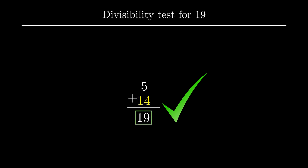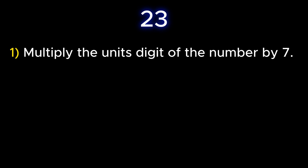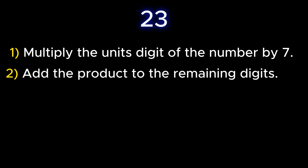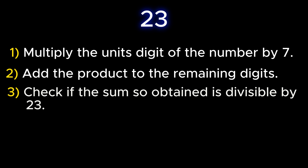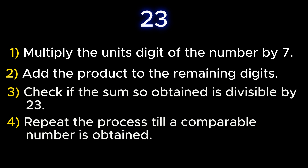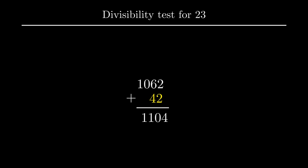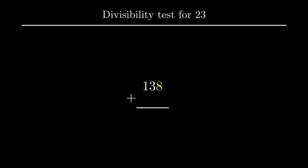Moving on to the next prime number, that is number 23. To check whether a number is divisible by 23, multiply the units digit by 7 and add it to the remaining digits. If the sum is divisible by 23, the given number is also divisible by 23; repeat until a comparable number is obtained. Consider the number 10626. The units digit 6 is multiplied by 7, giving 42, which is added to 1062, giving 1104. Repeating: 4 × 7 = 28, added to 110, gives 138. Further, 8 × 7 = 56, added to 13, gives 69. Since 69 is divisible by 23, the given number is also divisible by 23.